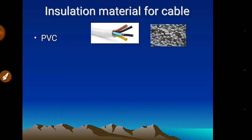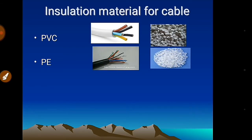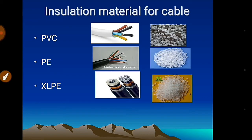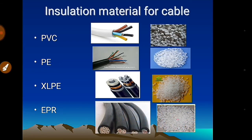PVC creates halogen gases when it burns, which is harmful to human health. Polythene (PE) is mostly used for communication cable due to its low dielectric loss. Its normal working temperature is 90–110°C. XLPE also has a working temperature of 90–110°C. A co-polymer of ethylene and propane is more flexible than XLPE and PE, with the same temperature range.